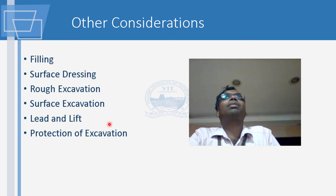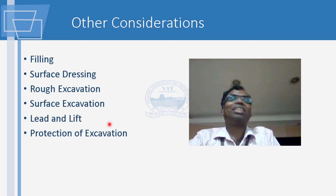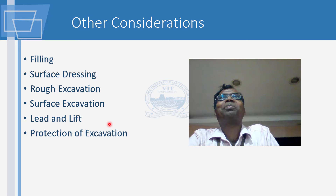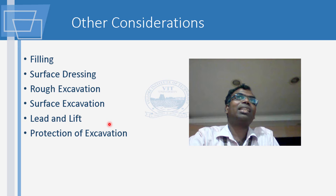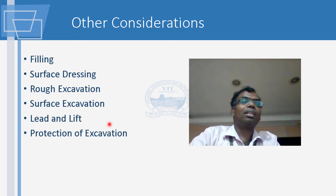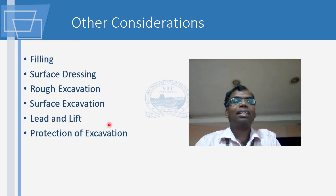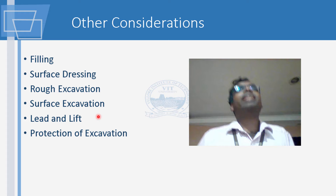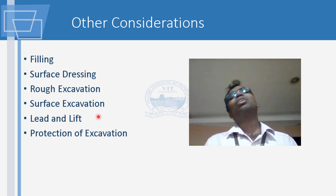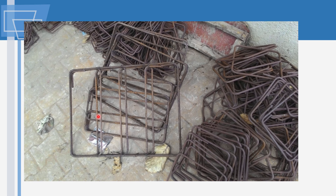Do you remember the unit of measure for surface dressing? It is measured in square meters. Surface dressing is a type of excavation where you do a maximum of 15 cm of excavation under very specific conditions. However, rough excavation is measured in cubic meters. Surface excavation on specific terms is measured in square meters, but almost all excavation is done in cubic meters. You need to understand and know what unit of measure you are working in. Please refer to the IS 1200 series, which gives the various units of measurement.